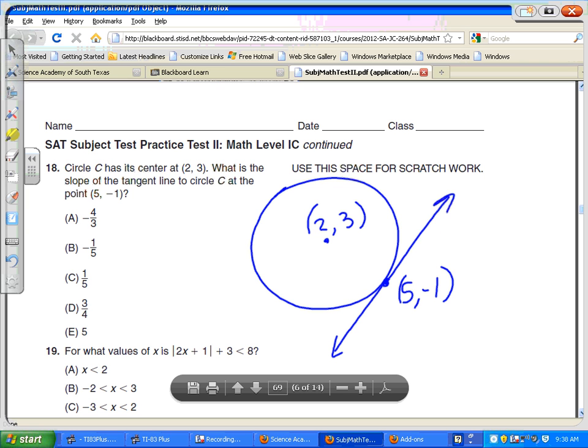If we could find the slope of this line segment that is perpendicular to the tangent line, then we would just take the negative reciprocal of that slope, we could find the slope of the tangent line.